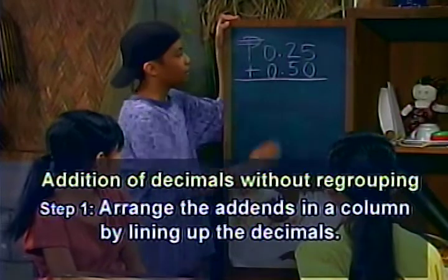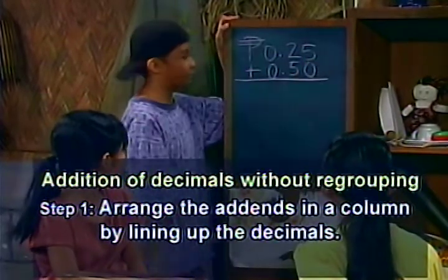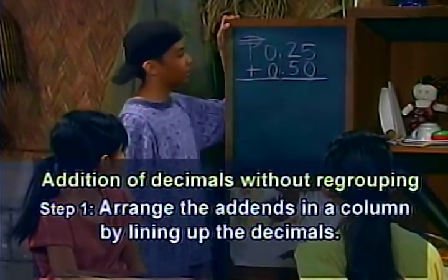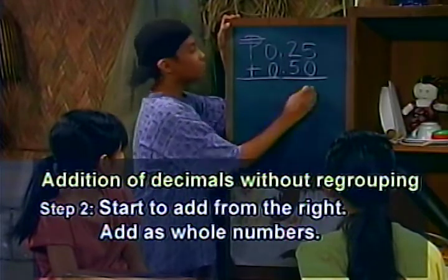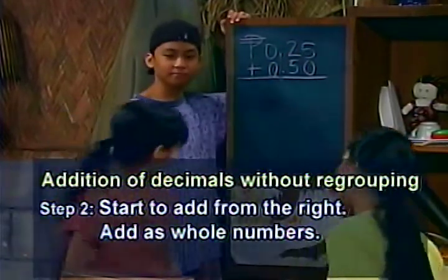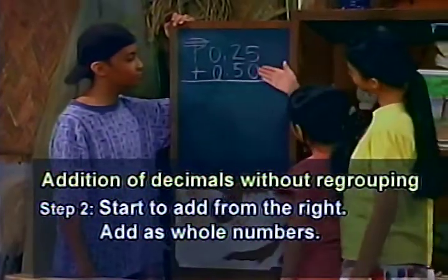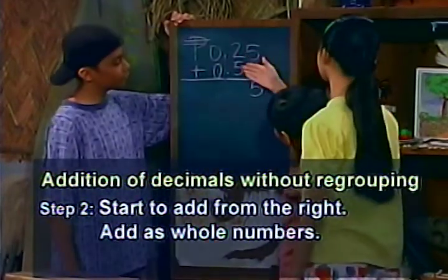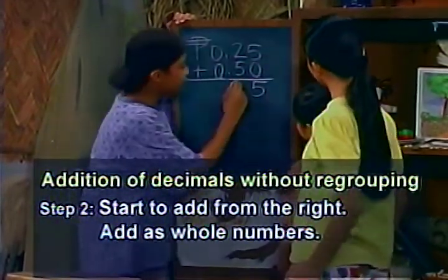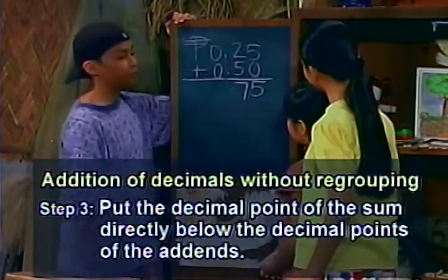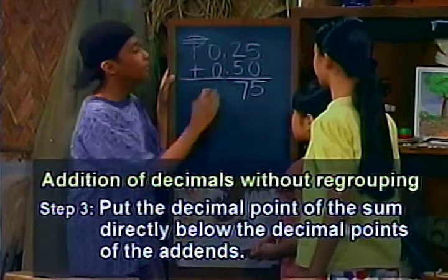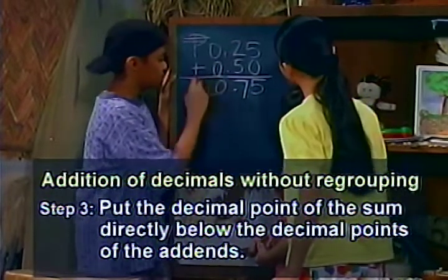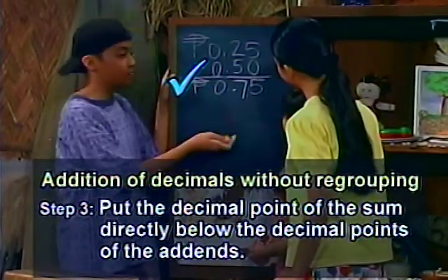First, we arrange the addends — 25 centavos and 50 centavos — in a column by lining up the decimals. Then we add as whole numbers starting from the right. So, 5 plus 0 equals 5. 2 plus 5 equals 7. And then we put the decimal point of the sum directly below the decimal points of the addends. So you see, the sum is 75 centavos.